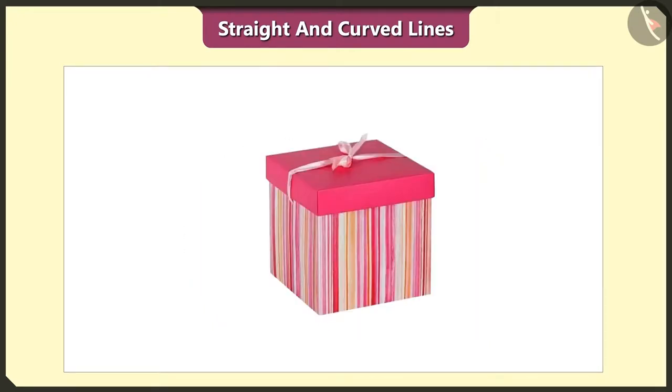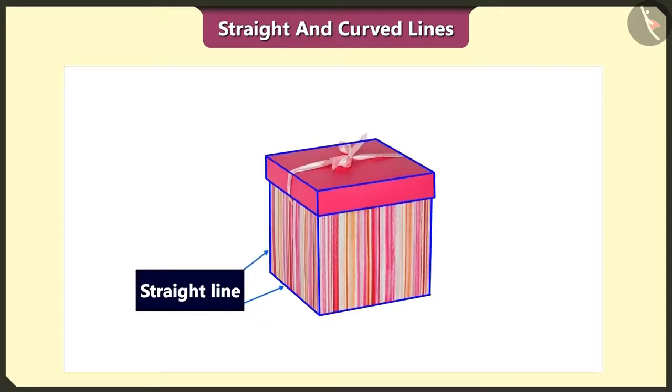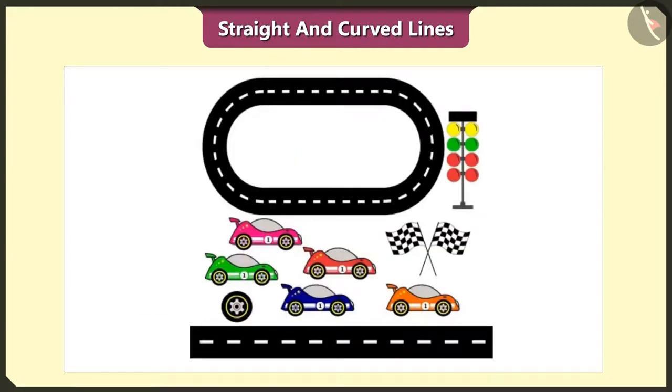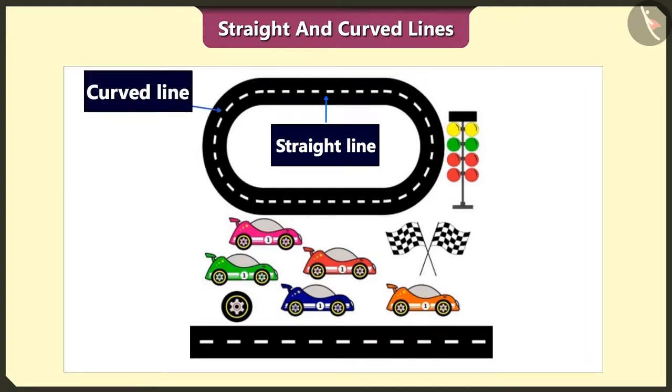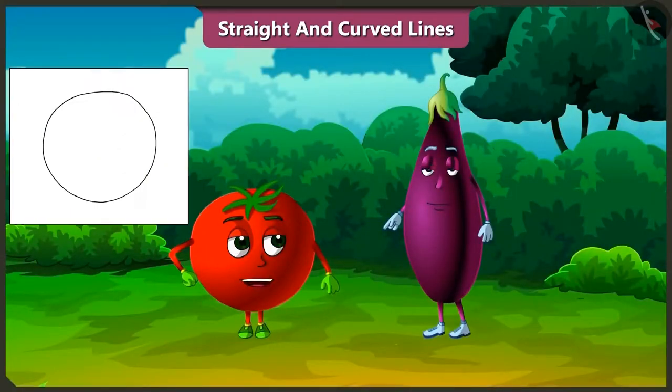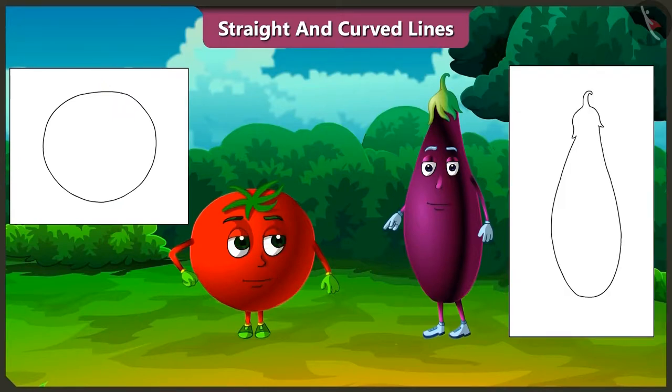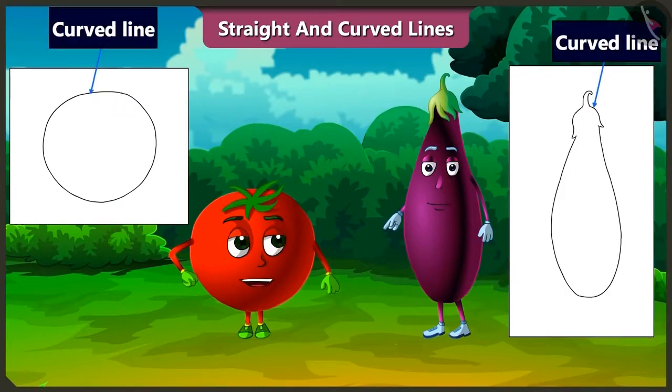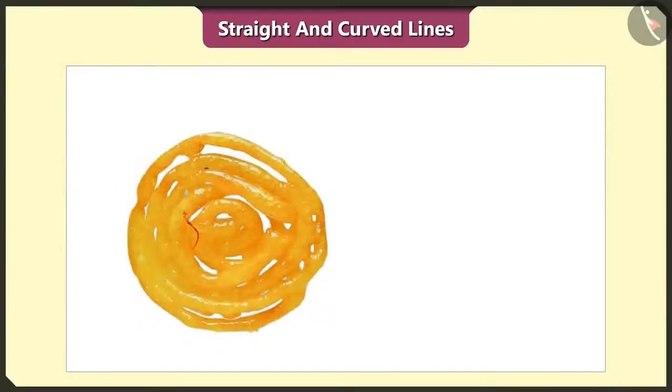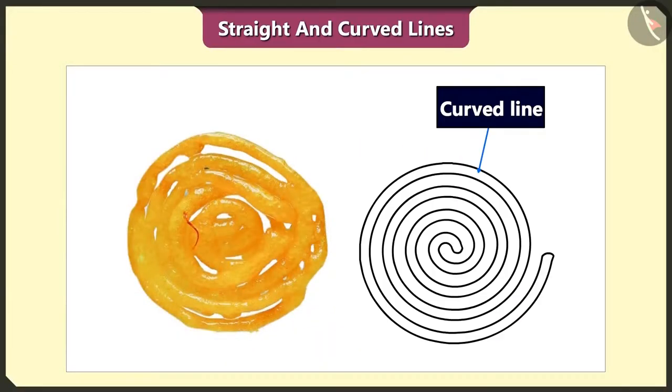And all the edges of this box are made up of straight lines. Yes, the edges of this racing track are made up of curved lines. Oh, Bingo! Did you notice? Both our shapes are also made up of curved lines.